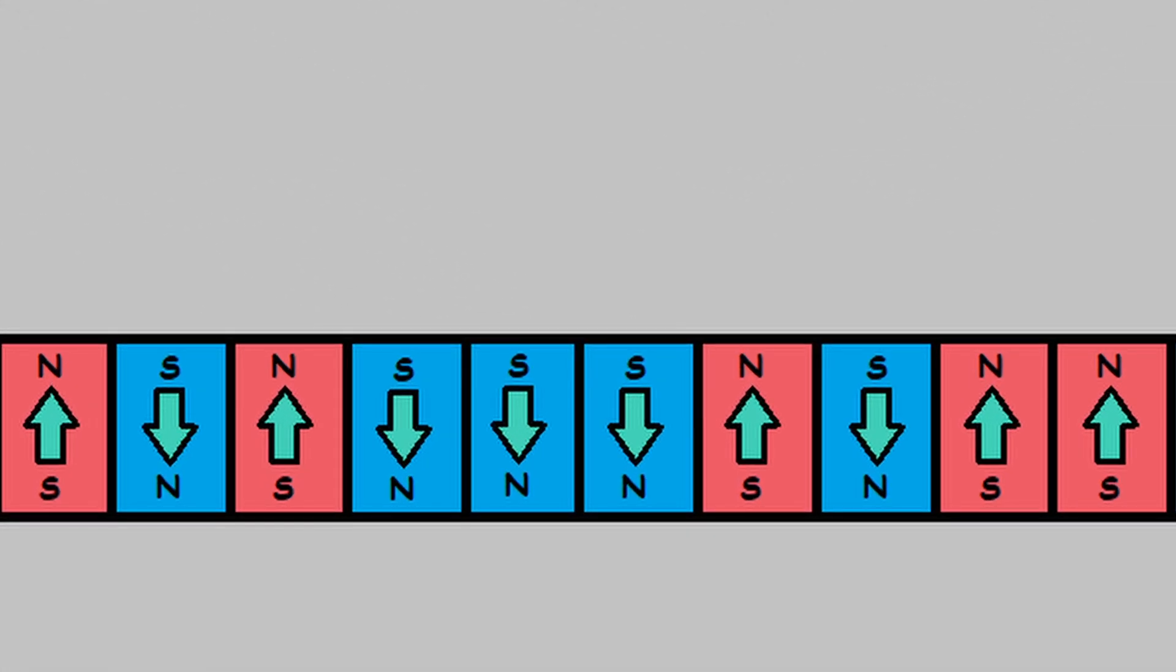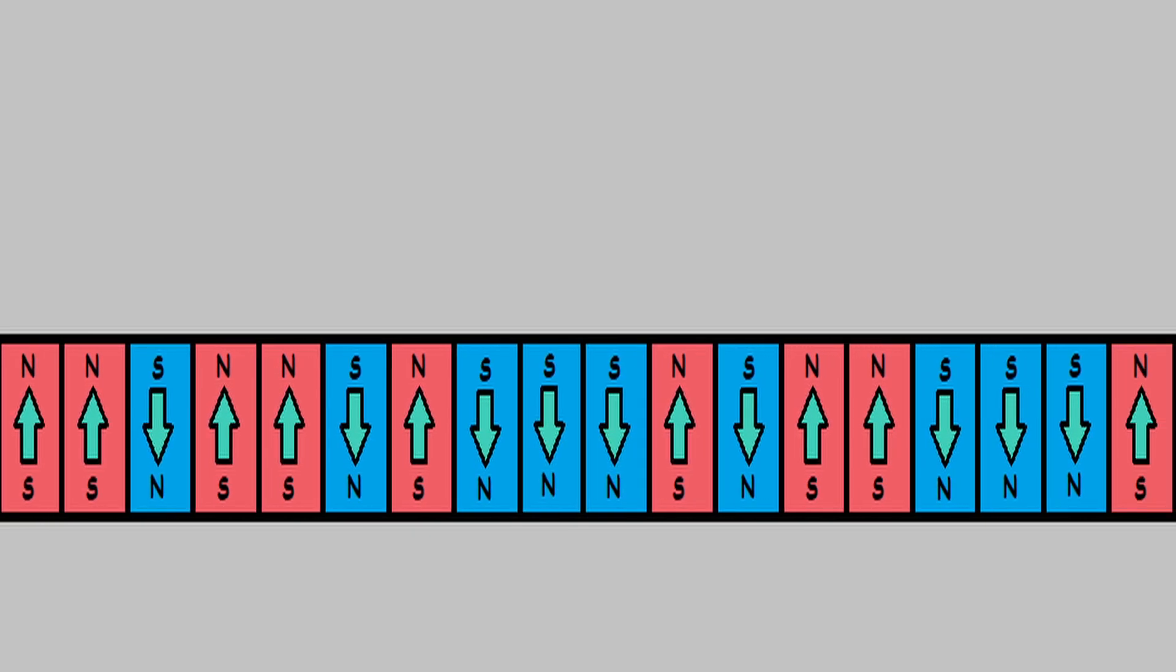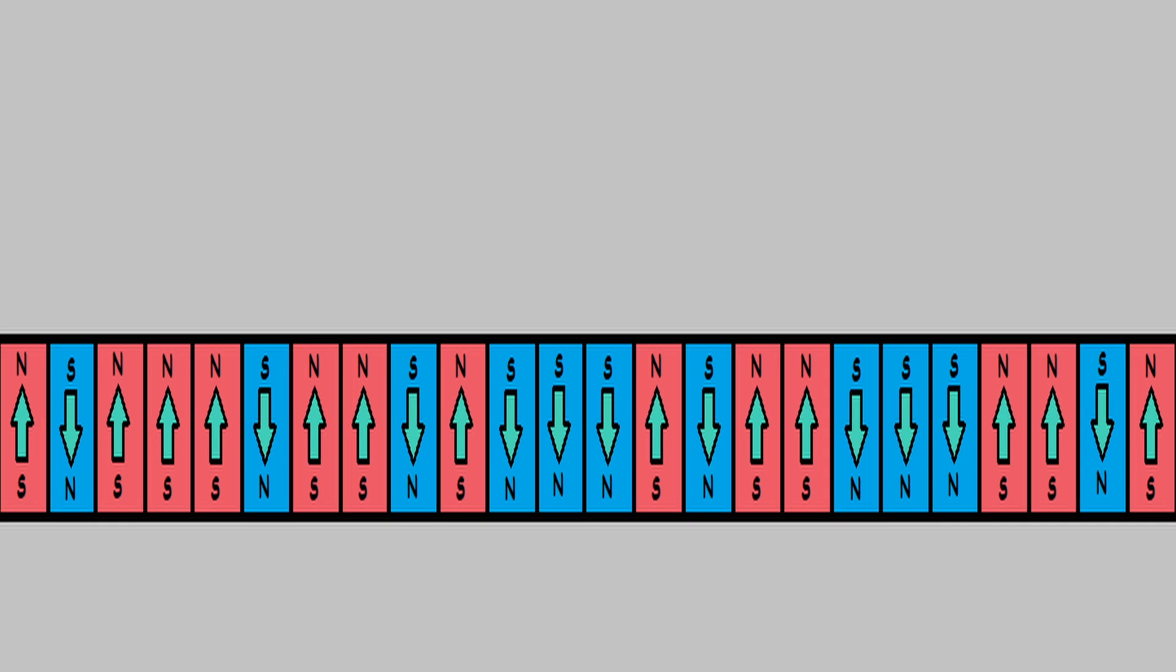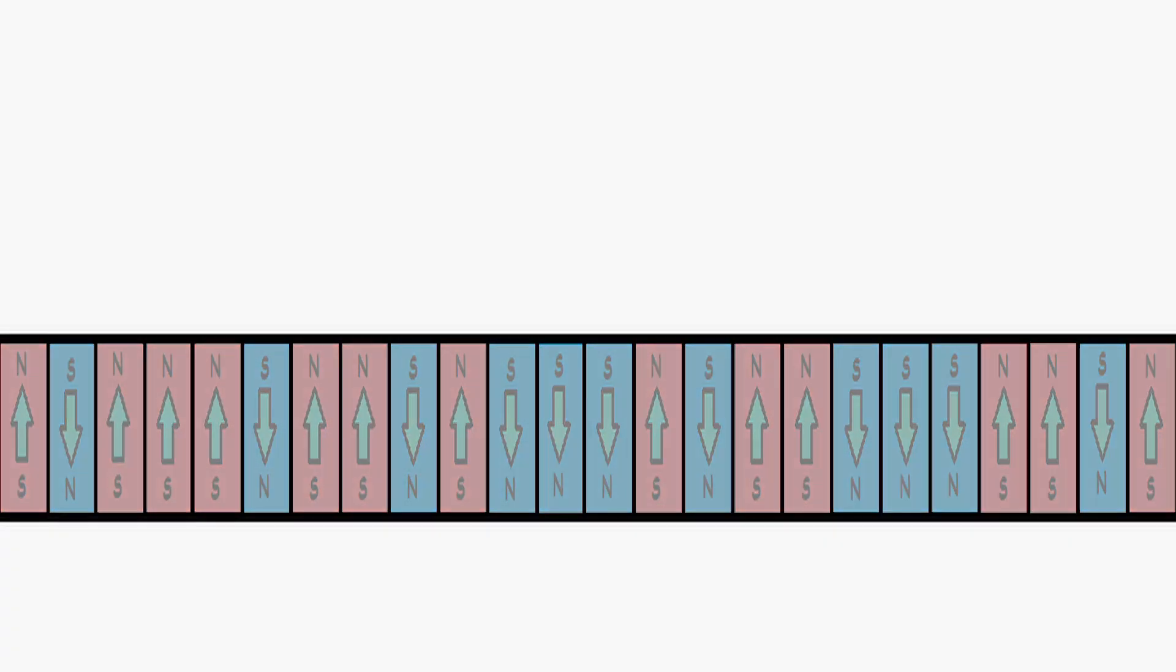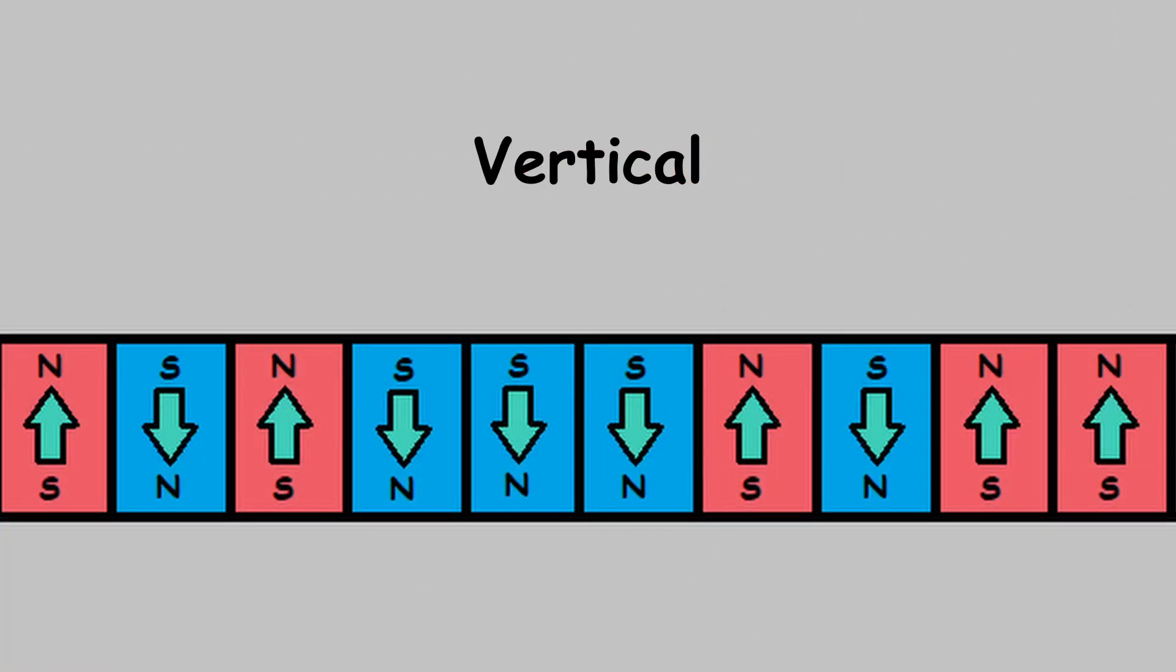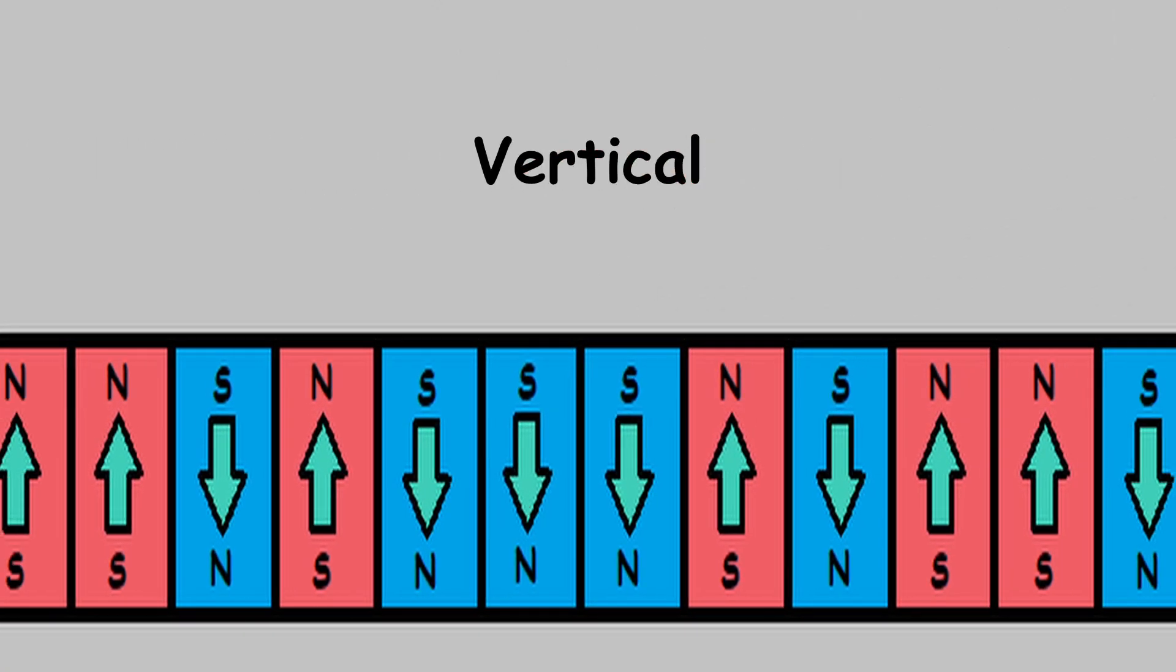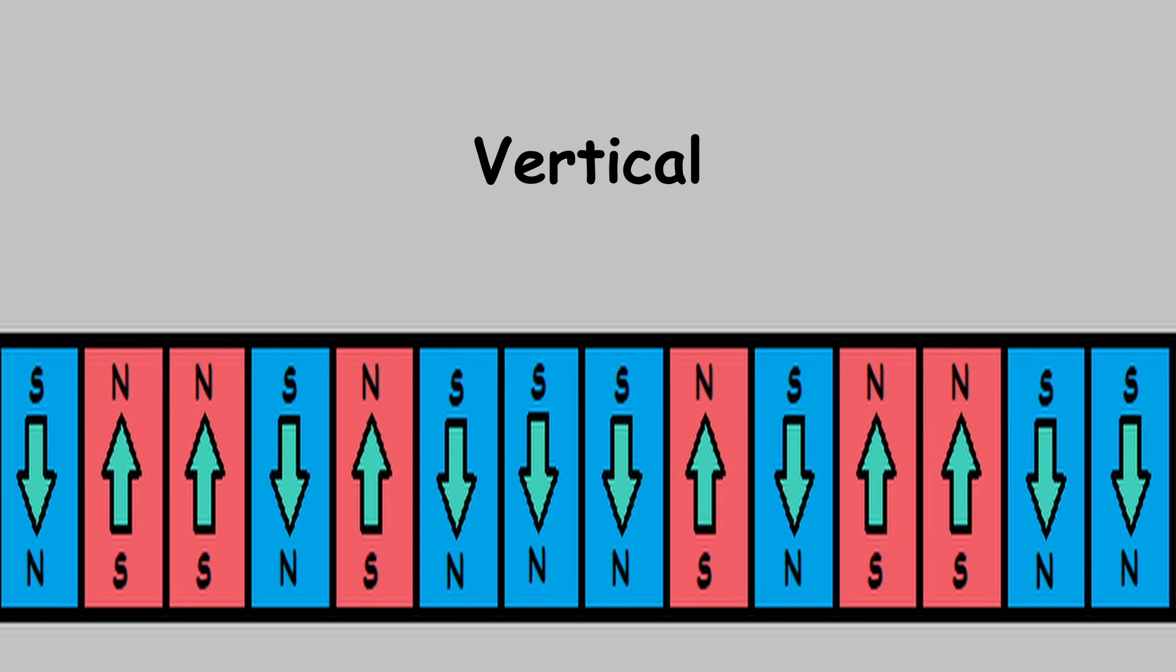So, how have scientists and engineers been able to fit so much more data on these drives? One way is to make the charged regions on the disk smaller. But the smaller the regions are, the more sensitive they are to heat. If their volume becomes too small, the information stored in them gets wiped out from the temperature interference. But in 2010, engineers figured out a way around this issue by switching the orientation of the charged regions on the disk from horizontal to vertical. This allowed them to utilize the depth of the disk to maintain the volume of the regions, while shrinking the amount of area each region takes up on the disk.